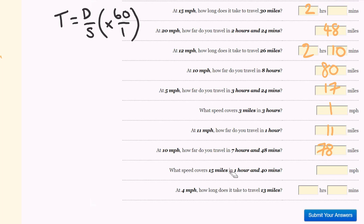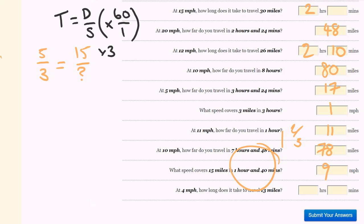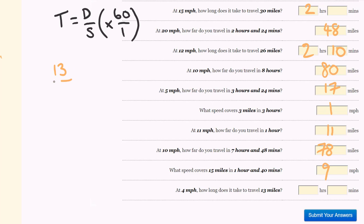What speed covers 15 miles in an hour and 40 minutes? Hour and 40 is 1 and 2 thirds, which as an improper fraction is 5 over 3. The speed is on the bottom, and this equals 15 miles. Times by 3: 3 times 3, our answer is 9 miles per hour. Last question: at 4 miles per hour, how long does it take to travel 13 miles? Distance 13 over speed 4 gives 3 hours with 1 left over — that's 3 and a quarter hours, which is 3 hours and 15 minutes.